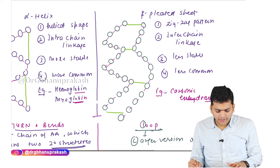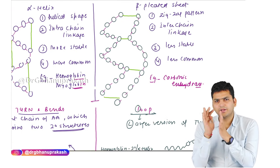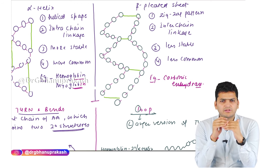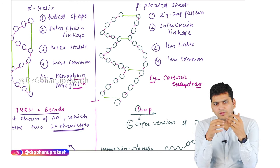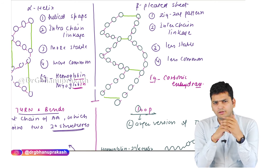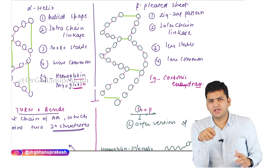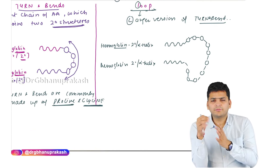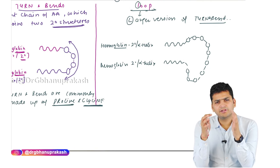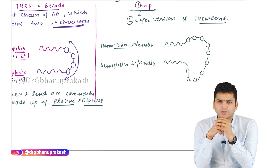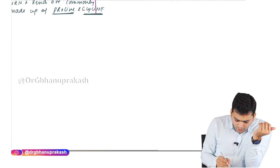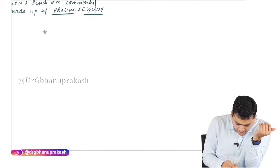To briefly revise: the most common secondary structure in the body is alpha helix, because it is more stable. Examples are the globin part of hemoglobin and myoglobin. Beta pleated sheet is less stable, has inter-chain linkage, and the example is carbonic anhydrase. Turn, bend, and loop are basically joining units — if short it is turn and bend, if long it is loop.